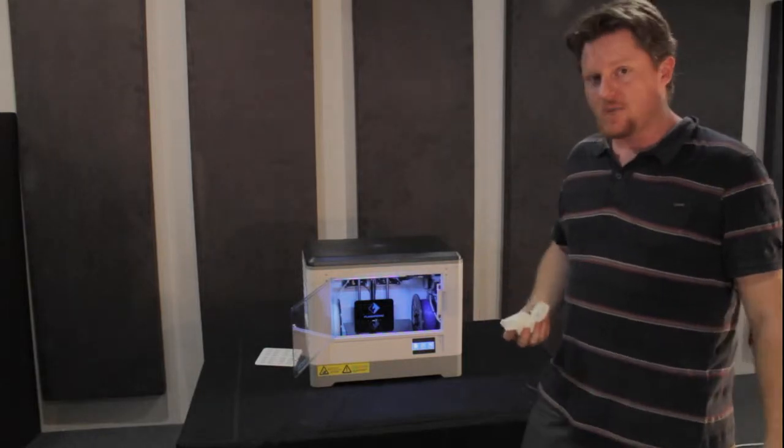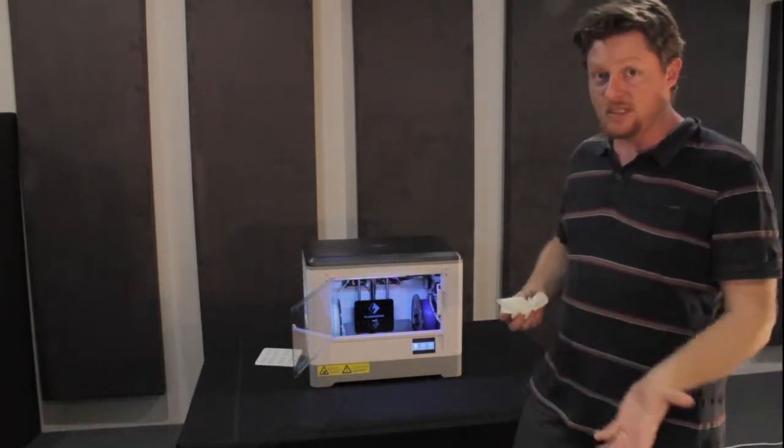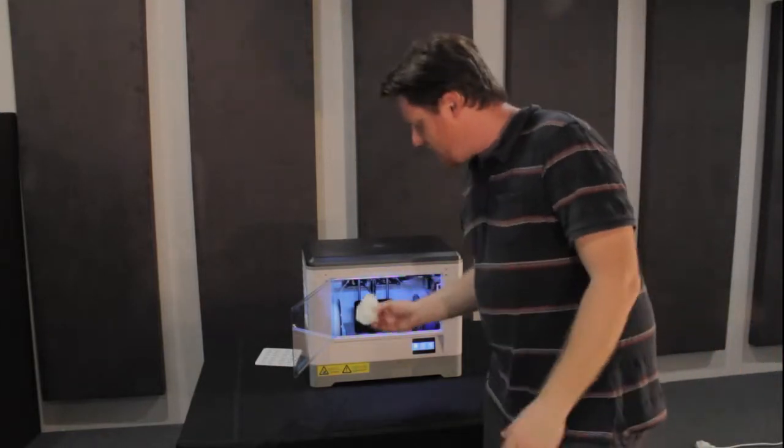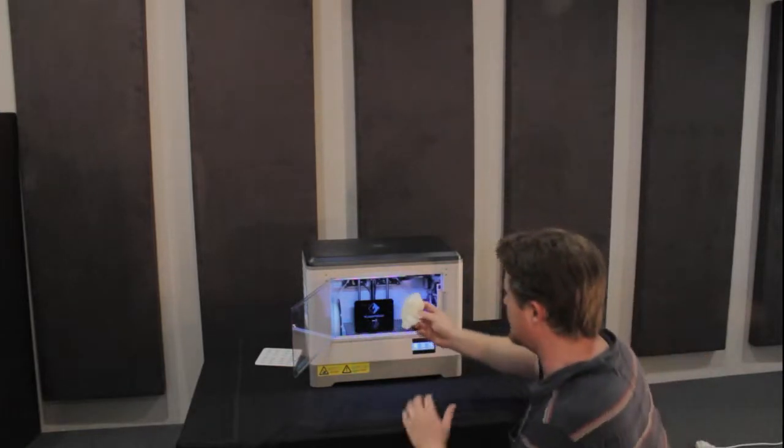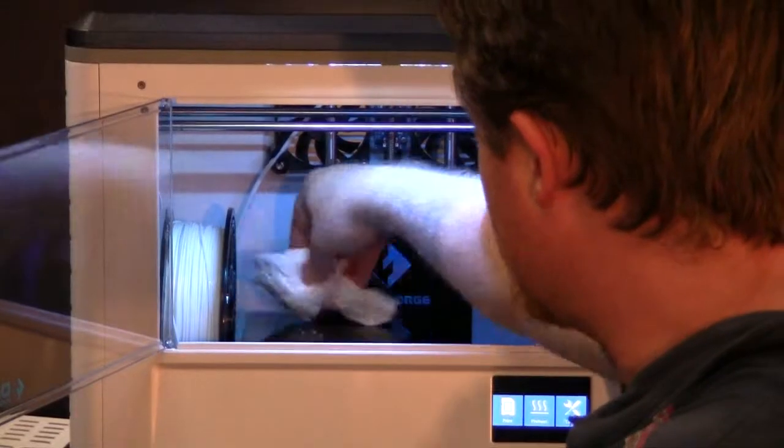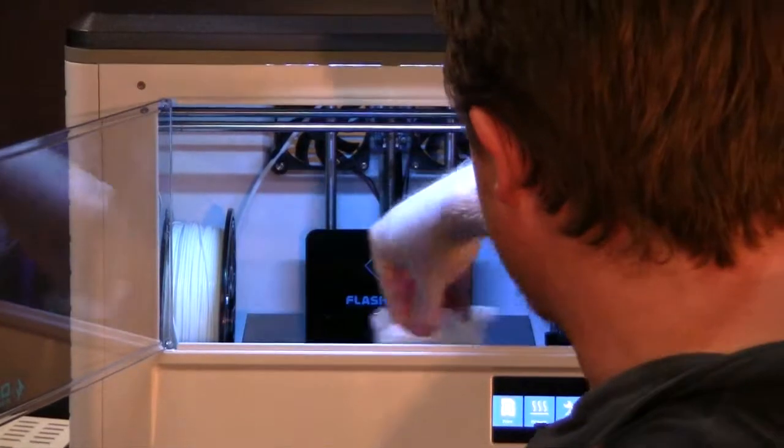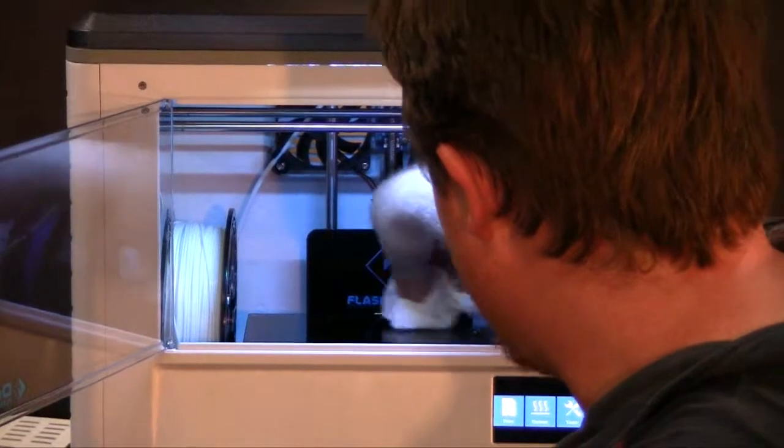Before we do our first print, we want to clean the surface because it might have some residue or dust from the packaging. We can do that with a bit of hand soap on a tissue or toilet paper - just put the soap on, spread it around, and that'll get off any grease that's on there.